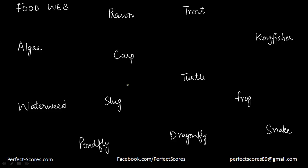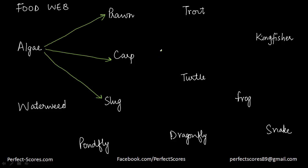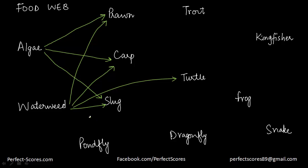We will construct a food web with up to 10 organisms — a combination of animals and plants. The organisms are: algae and waterweed as primary producers, then prawn, trout, carp, turtle, slug, pond fly, dragonfly, frog, kingfisher, and snake. The algae is taken by the prawn, the carp, and the slug. The waterweed is also taken by the prawn, the carp, the turtle, and the slug and the pond fly. These green arrows show the relationship between the producer and the primary consumers.